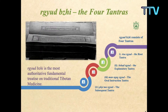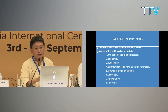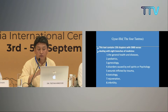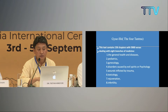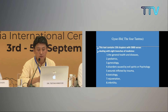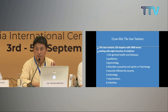Gyushi, the four tantras, has four volumes: the root tantra, the explanatory tantra, the oral tantra, and the subsequent tantra. This text contains 156 chapters with 5,900 verses, dealing with eight branches of medicine: general health and disease, pediatrics, gynecology, disorders caused by evil spirits (or psychology), wounds inflicted by trauma, toxicology, rejuvenation, and infertility.